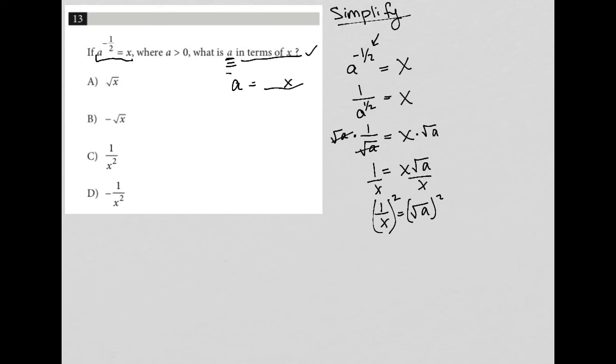Now I have one over x squared. One squared - this squared here impacts the one, but one squared equals one. And it impacts the x - x squared equals x squared. Then this squared here gets rid of the square root. So one over x squared equals a.